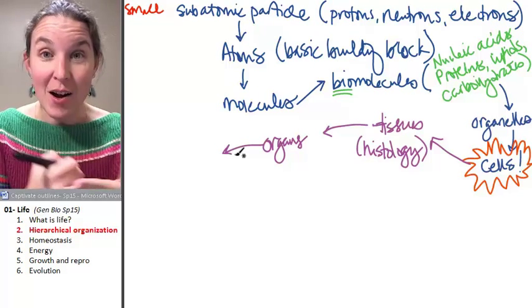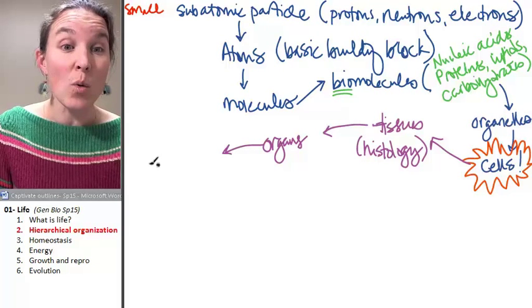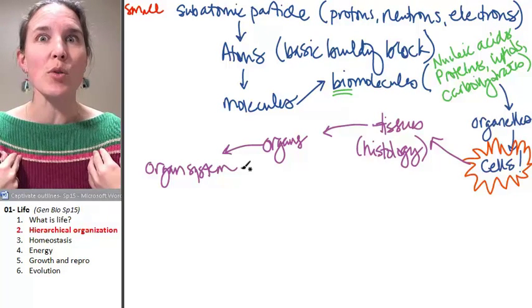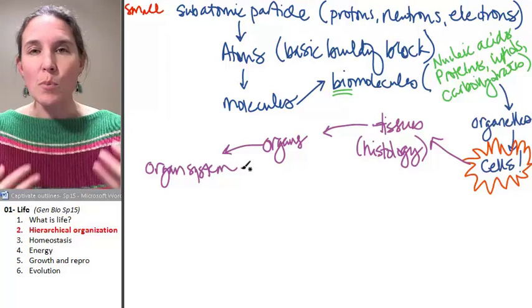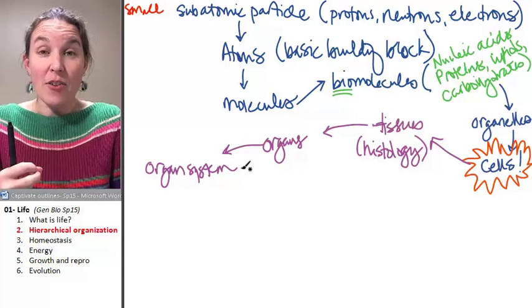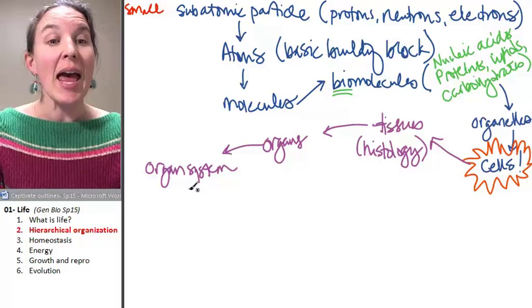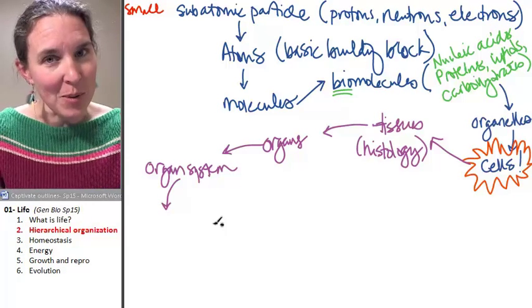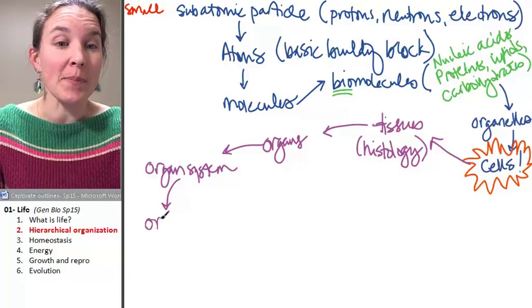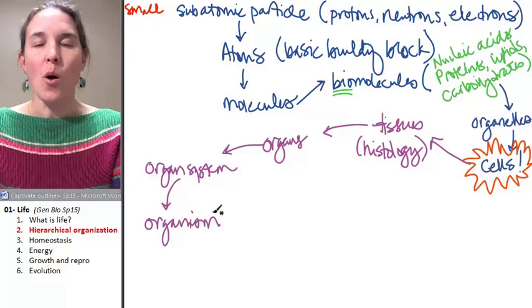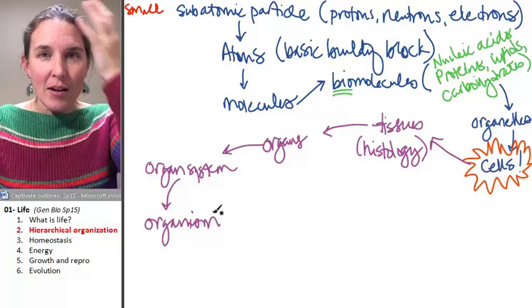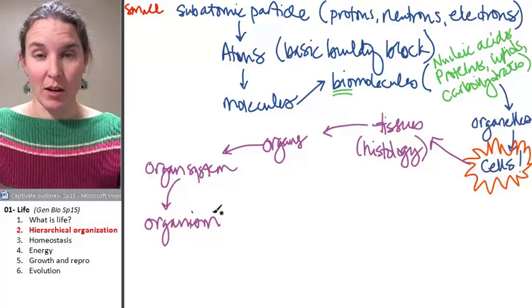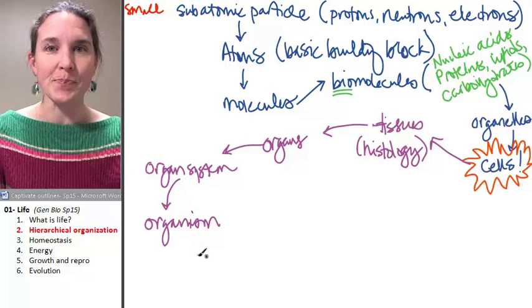Organs, if they work together for a common function, are you seeing a little pattern here? Then you get organ systems. An organ system, an example would be the cardiovascular system, the respiratory system, the digestive system. Here we've got multiple different organs that are working together, and they're all working together to do the same basic function. Organ systems, when you have a whole group of them working together to maintain homeostasis, which we'll talk about in a second, organ systems make up an organism. Now, where does an organism start and where does it end? That's actually another rather philosophical conversation that we could have. But we're not done.